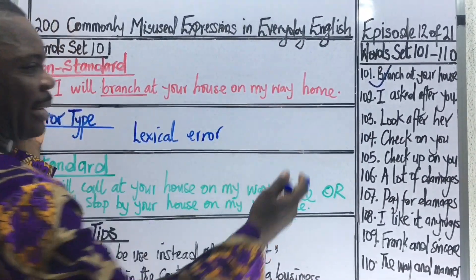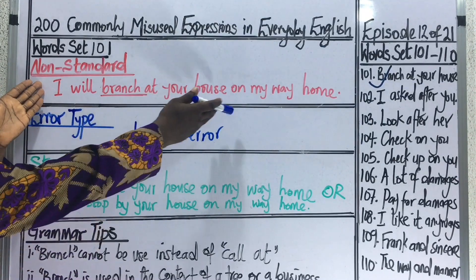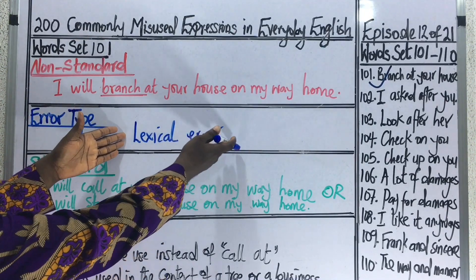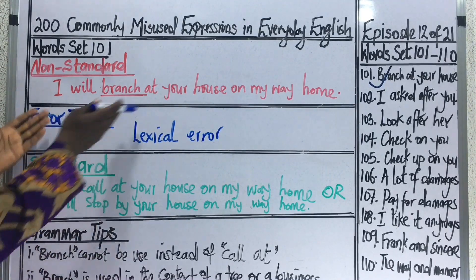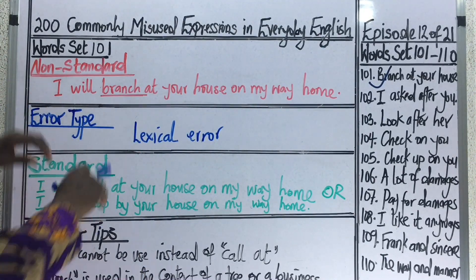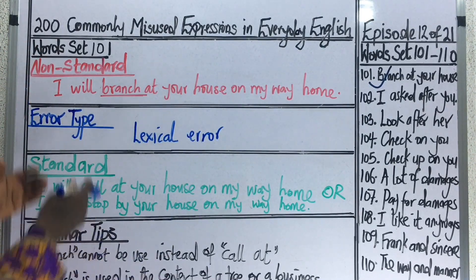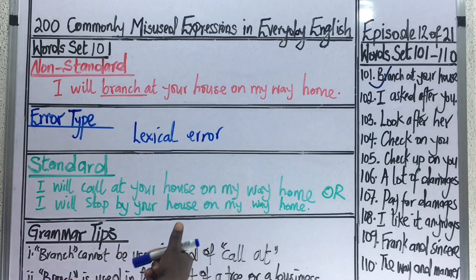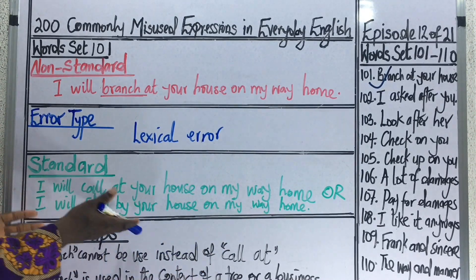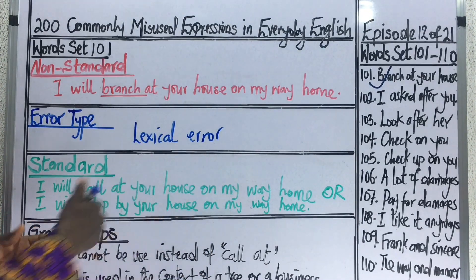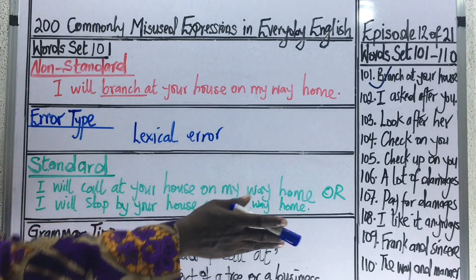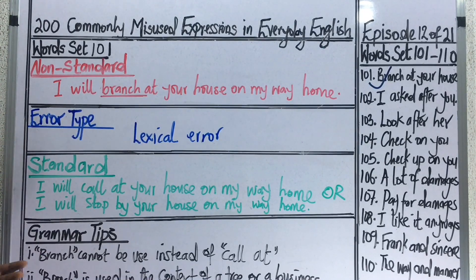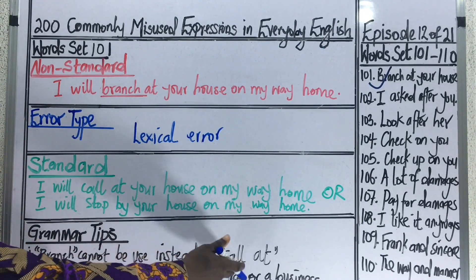Our first word set is: I will branch at your house on my way home — with the word 'branch' underlined to indicate a logical error. The standard usage is: I will call at your house on my way home, or I will stop by your house on my way home. The word 'branch' cannot be used instead of 'call at.'